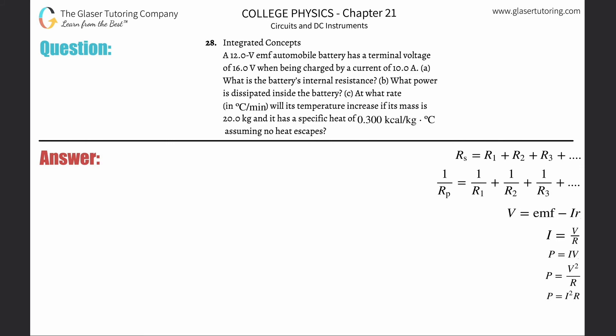Number 28, integrated concepts. A 12 volt EMF automobile battery has a terminal voltage of 16 volts when being charged by a current of 10 amps. Letter A: what is the battery's internal resistance? We can use the formula over here on the right hand side to solve this.